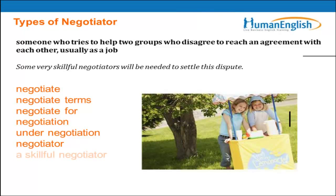Let's look at the vocabulary we will be seeing throughout the webinar. 'Negotiate' is the verb. 'Negotiate terms' — terms are the conditions. You negotiate for something, such as a pay rise. 'Negotiation' is the noun — something could be under negotiation, like the details of a contract. 'Negotiator' is the person. You should always be a skillful negotiator and learn some negotiating tactics or strategies. Now I'm going to read a text — listen carefully, then note any expressions or words you hear and put them in the chat box.